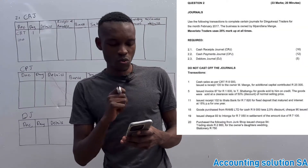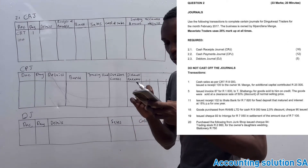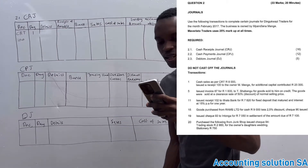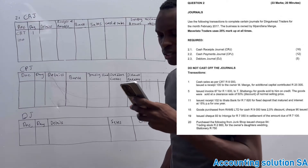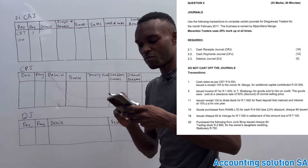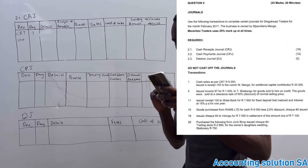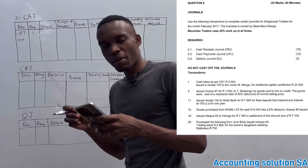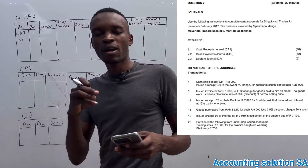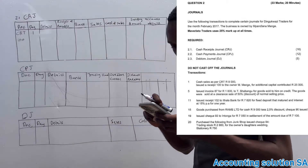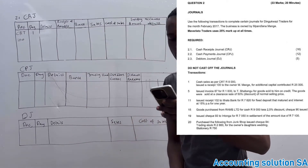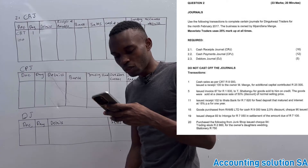Let's go straight to the question. They say use the following transactions to complete certain journals for Dingos Ngwazi Traders for the month of February 2017. The business is owned by Mpandiana Mange. This business uses a markup of 25 percent, which means that when we calculate sales we need to calculate cost of sales using a markup of 25 percent as well. We need to do: 2.1 cash receipts journal, 2.2 cash payment, 2.3 debtors journal. Do not calculate the totals of the journals.